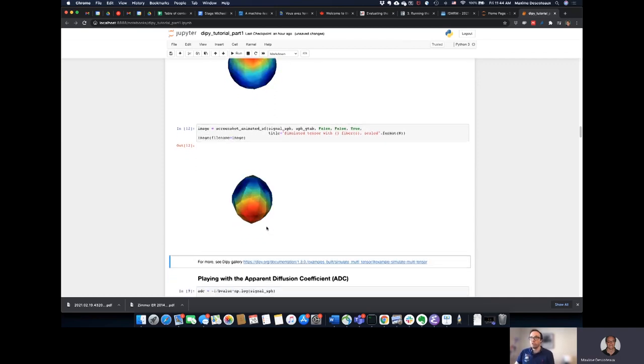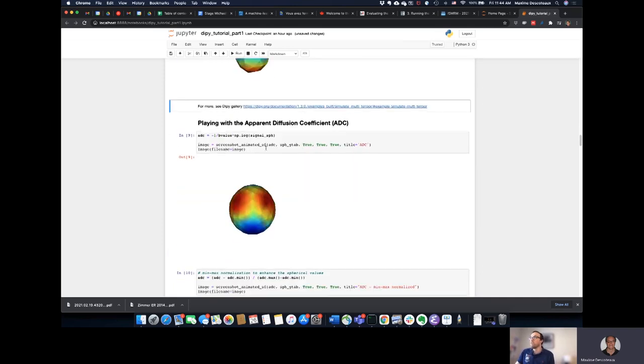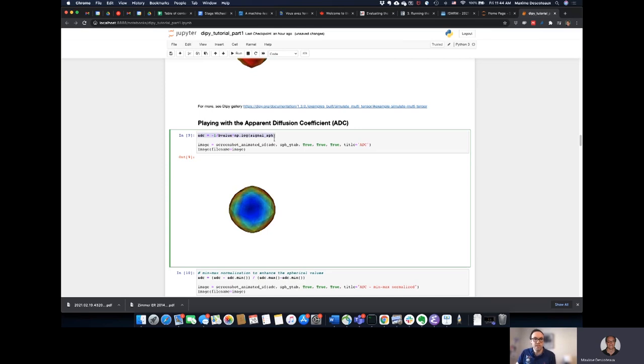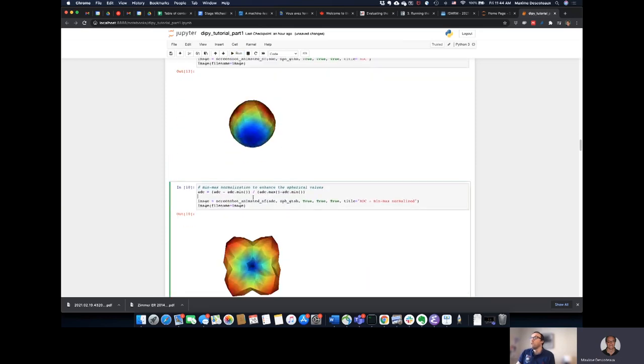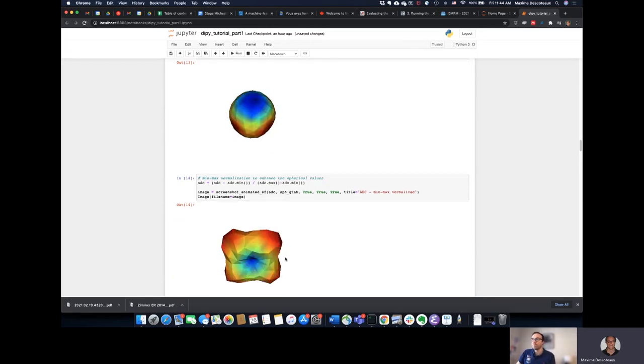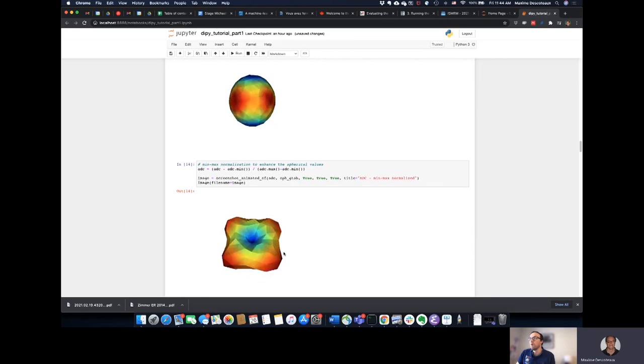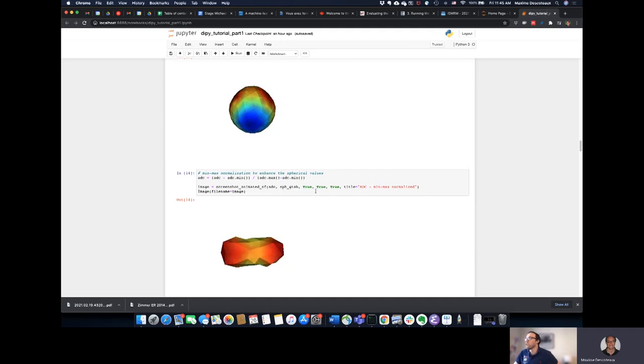So this is a spherical function, values on 64 points of the sphere. Now, if I take the log of this signal, I actually get the ADC. The apparent diffusion coefficient is related by a negative exponential. So just taking the log of the diffusion signal, you get the ADC. And so suddenly the ADC now looks like a crossing fiber object. It turns out to not be properly parameterized to do fiber tracking, but you at least see that this object is a two fiber compartment object. And finally in this little demo, what I want to show you is the spherical harmonics.